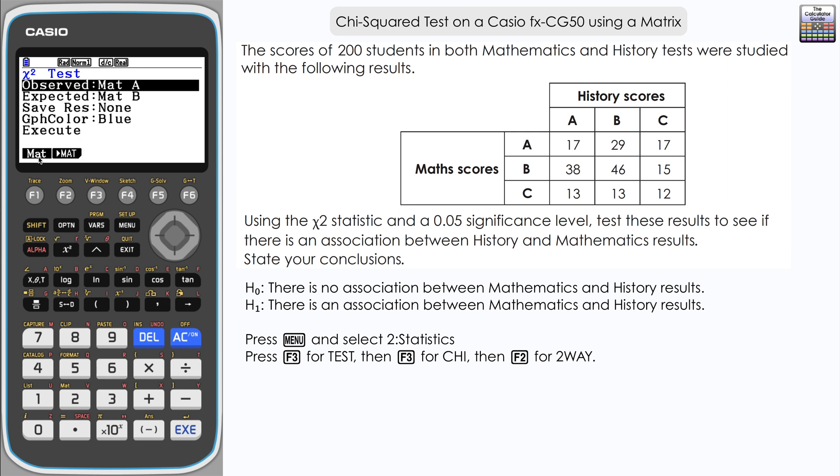F1 we can press if we've already got observed data stored in a different matrix other than A. We can use F1 to select that matrix. However, we haven't got anything inputted yet, so we're just going to use the default matrix A. Let's input our figures into that.